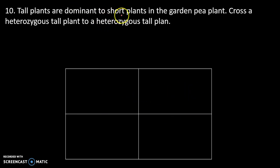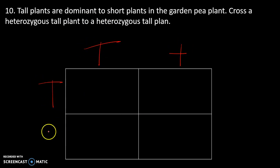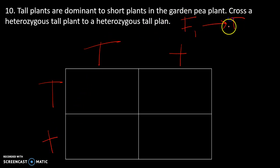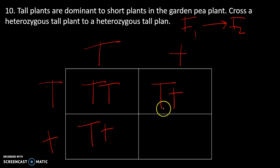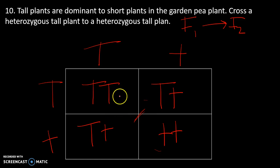Last one: tall plants are dominant to short plants in garden peas. Cross a heterozygous tall plant with a heterozygous tall plant. We should know our predictable ratios by this point — this is the F1 cross to the F2 generation. Genotypically: 25% homozygous dominant, 25% homozygous recessive, and 50% heterozygous dominant. For harder problems, click on the next video.